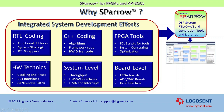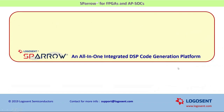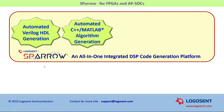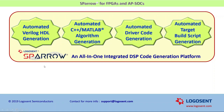With Sparrow, integrated system development can be as simple as dragging and dropping the desired hardware and software components from its library and making simple data path connections between them at an abstract level. Complete systems that typically take several months and a sizable team to develop can be implemented and deployed on target systems in a matter of a few days by a much smaller team. With Sparrow, users can automatically generate integrated Verilog RTL core, C++ algorithms and MATLAB models, software drivers, and FPGA build scripts simultaneously.